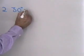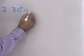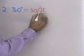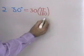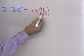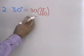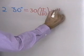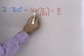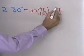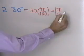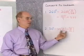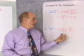Here's our next example: convert 30 degrees into radians. Take 30 and multiply by π over 180. Reducing to lowest terms — 30 divides into 180 six times — we end up with π over 6. So π over 6 radians is the same as 30 degrees.